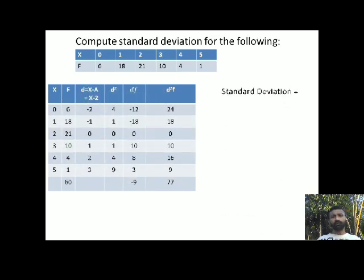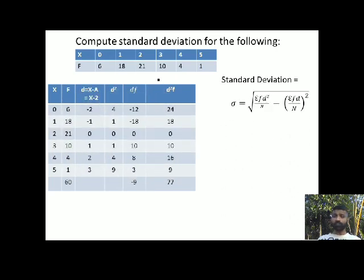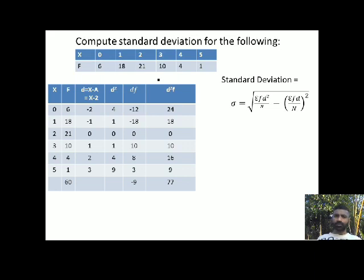Let me first consider the formula. Sigma is equal to the square root of the sum of fd squared by n, minus the sum of fd by n, whole square. Please note: simple mathematics — f into d and d into f are both the same. So in the table I may write either fd or df; it doesn't make any difference.